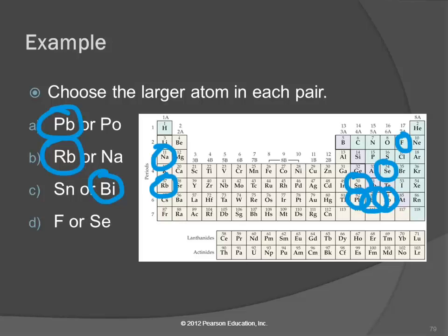So here's fluorine and here's selenium. Here we would expect fluorine to be smaller on both accounts because it's higher up in the periodic table and it's also to the right, so selenium would be the larger.